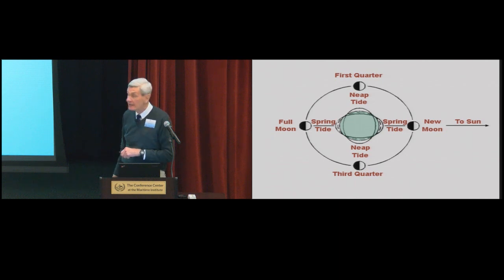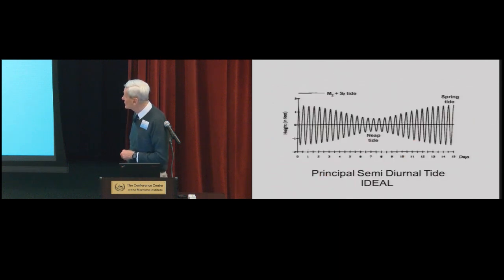In the ideal, you'll see over the course of a month for the principal semidurnal tide, you'll see something like this. You get two tides a day going along, and during the spring period, significantly greater range than during the neap period. Very simple.